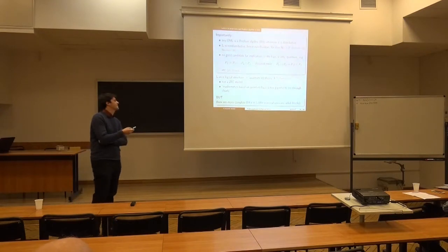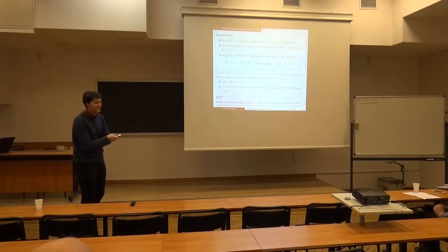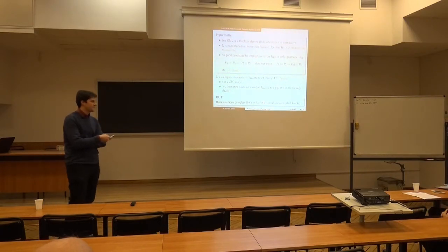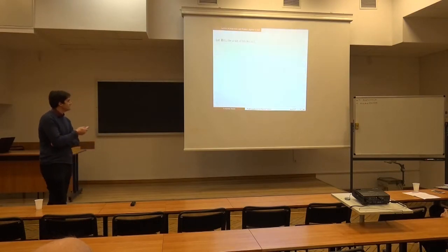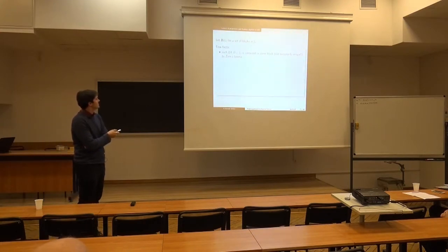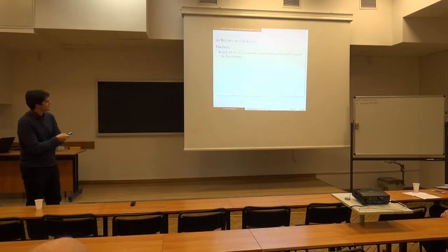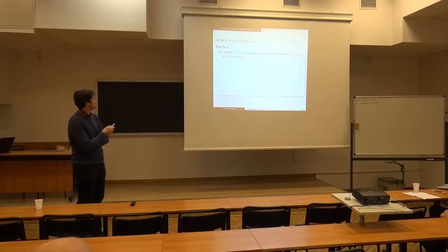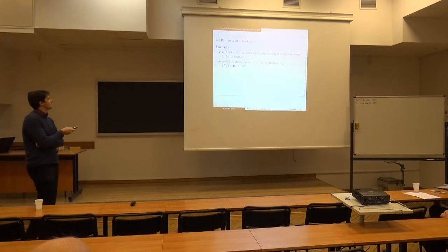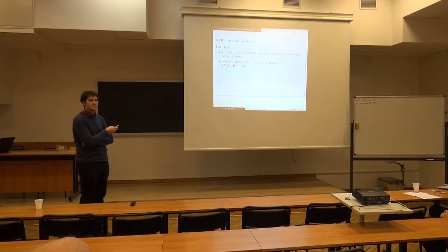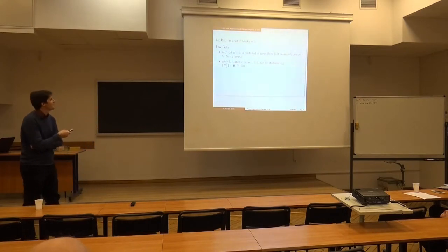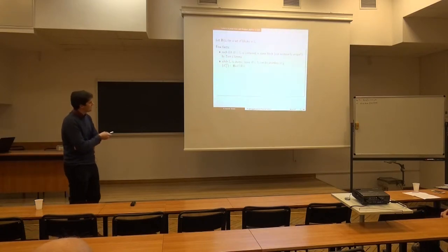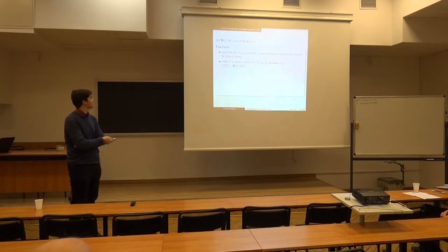There is a way out: we have many complete Boolean algebras in L, and if we talk about maximal ones, we call them blocks. Let capital B be the set of blocks in L. Each Boolean algebra inside L is contained in some block, and this block is not necessarily unique — this can be shown easily by Zorn's lemma. The second important thing is that while L is always atomic — the atoms being the projections to one-dimensional subspaces — some blocks can be atomless. An example is the spectral resolution for the position operator on the real line.